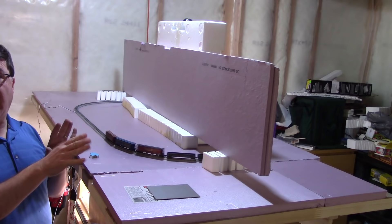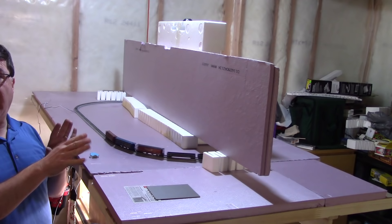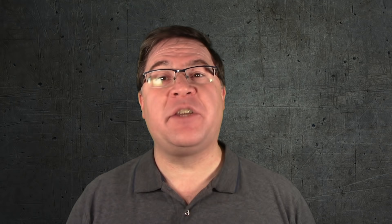So even if all you have is a basic loop, by putting a scenic divide down the middle, you can create two different scenes for the train to run through. Still, the one major drawback to a single loop of track is that you can only run one train. And unless you do a little juggling, chances are you're going to be running it in only one direction. So the next thing to do is adding a passing siding.